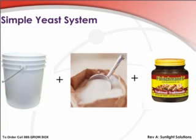Yeast produces CO2 as it digests sugars, and an easy system can be made to produce CO2 for your garden. The main drawback with this system is that it is relatively short lived, takes more regular maintenance, and does not produce high enough CO2 to sustain a large scale garden.